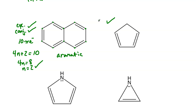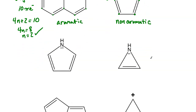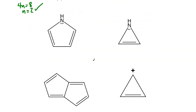For the second example, it is cyclic. Checking conjugation at each point: yes, yes, yes, yes — but this carbon at the top is a problem. It has two hydrogens, no lone pairs, and no ability to participate in the delocalization system or create a p orbital. Because we have an sp3 hybridized carbon present, we do not get full conjugation and this is classified as non-aromatic. There's no need to continue to Hückel's rule once you've failed an earlier step.